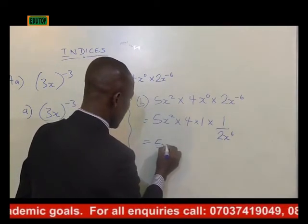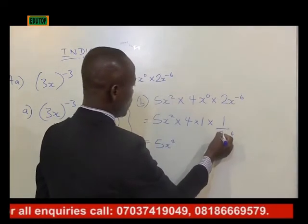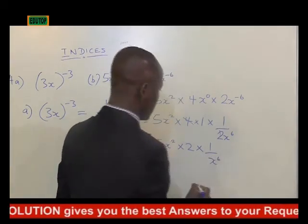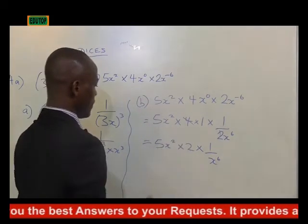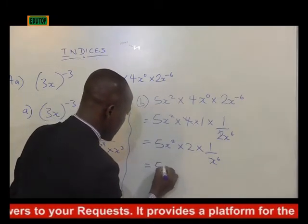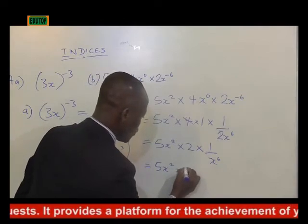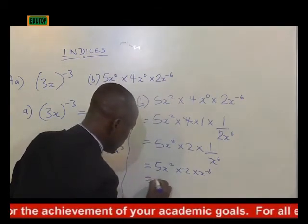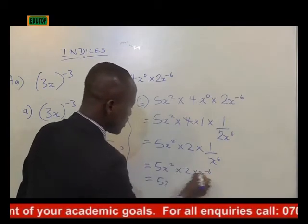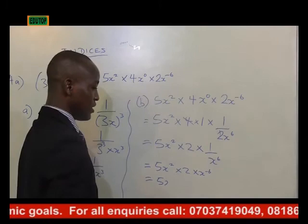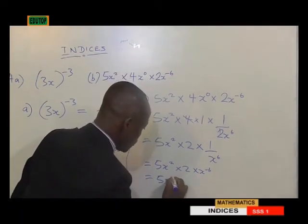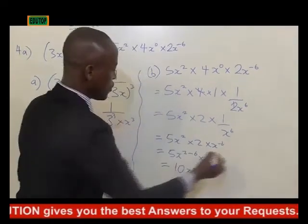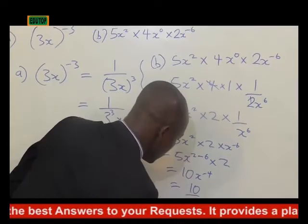We can bring it together: 5x squared times 2 times x raised to power minus 6. Combining the coefficients: 5 times 2 is 10. For the x terms: x squared times x to the minus 6 gives x raised to power 2 minus 6, which is x to the power minus 4. So the result is 10x raised to the power minus 4, which is the same as 10 over x raised to power 4.